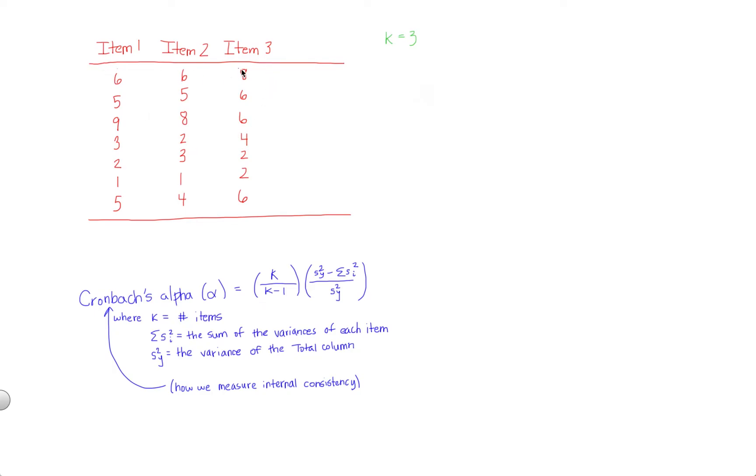So the first step in any internal consistency problem, in any Cronbach's alpha problem, is to create a total column. So the total column is simply a sum of each participant's scores. So here we have six plus six plus eight. That comes out to 20. For participant number two, five plus five plus six comes out to 16. For participant three, nine plus eight plus six is 23.